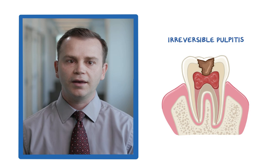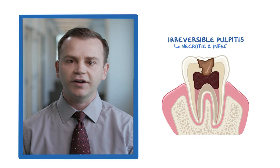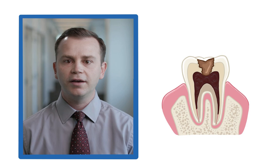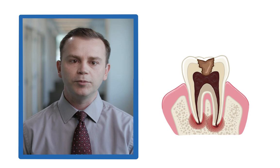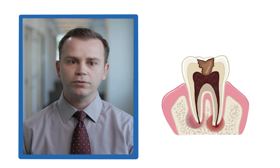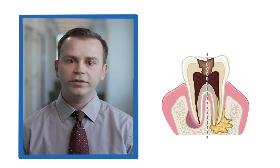As microorganisms invade the diseased pulp tissue, it becomes necrotic and infected. Inflammatory and bacterial byproducts build up in the root canal, escape through the apical foramen, and cause apical periodontitis, or inflammation of the periradicular tissues. Here, the body's defenses initiate an immunologic response. The interaction between host and pathogen may cause bone resorption or produce pus, resulting in abscess formation.